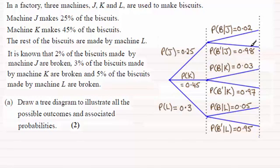So I've got similar results here for K and L but I do encourage you to use this type of notation where we use the given symbol because the probabilities are dependent on the type of machine that the biscuits were manufactured from.